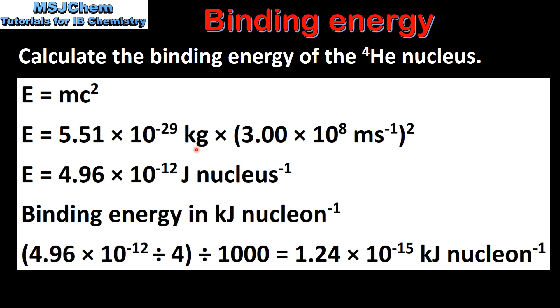We then multiply the mass defect by the speed of light squared, which gives us 4.96 times 10 to the negative 12 joules per nucleus.